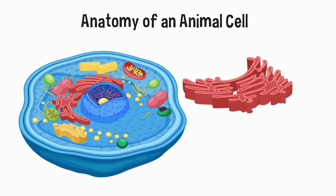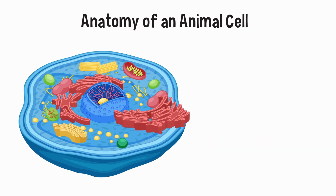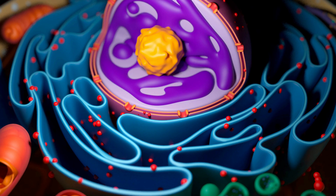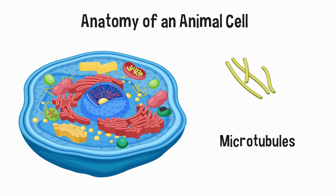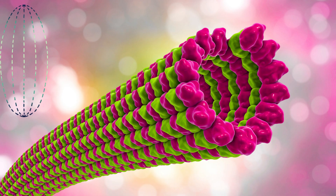The endoplasmic reticulum is a fine network of interconnected tubules, a reticulum, hence the name endoplasmic reticulum. Microtubules are polymers of tubulin that form part of the cytoskeleton and provide structure and shape to eukaryotic cells.